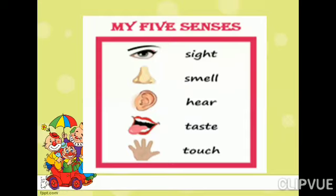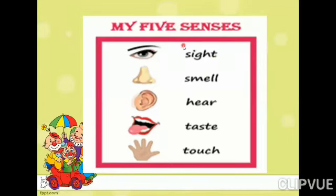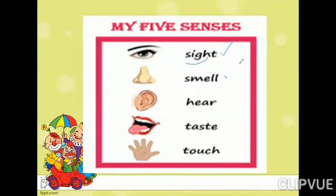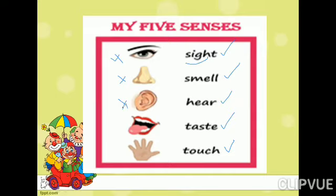We have five senses and these are the organs. You can see here: sight, smell, hear, taste, and touch — these all are senses. The organs are our body parts. Eyes are the organ, and sight is the sense — with the help of our eyes we can see different types of objects.